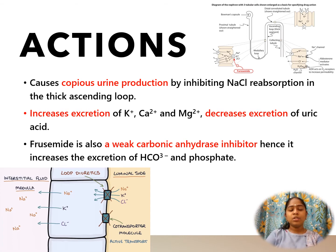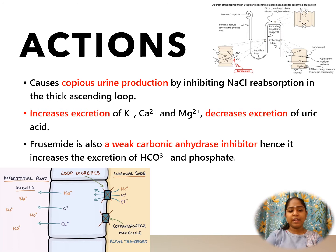Therefore, there is no net excretion of calcium and no hypocalcemia. Furosemide decreases the excretion of uric acid by increasing its reabsorption in the proximal convoluted tubule. Furosemide is also a weak carbonic anhydrase inhibitor, hence it increases the excretion of bicarbonate ions and phosphates.